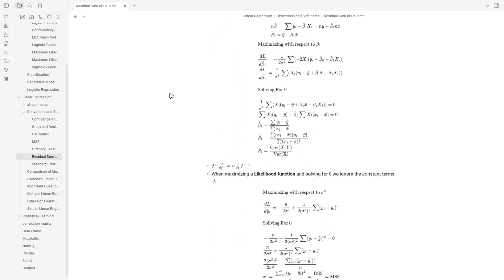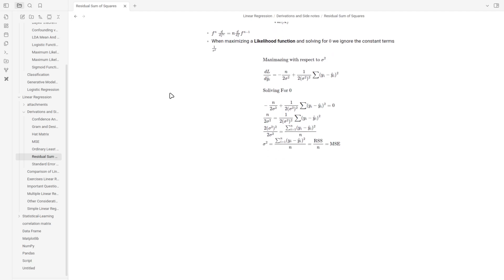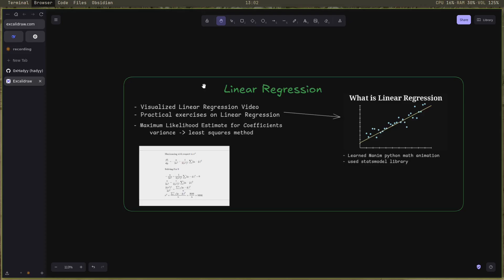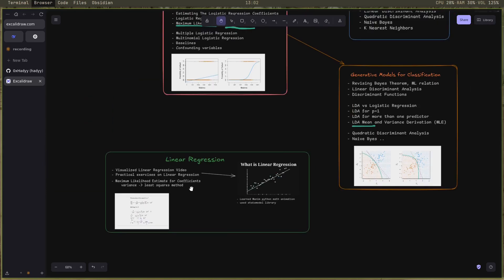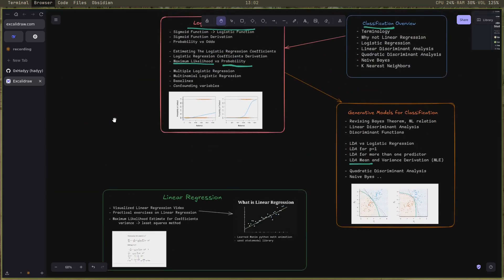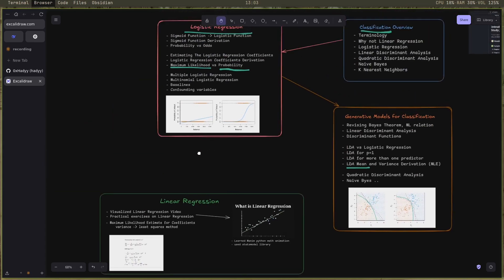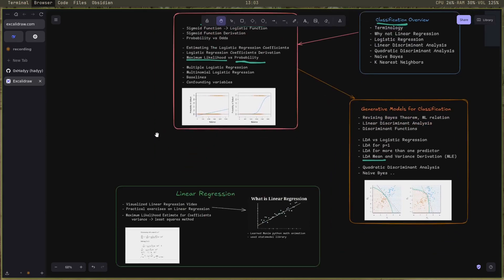When studying the maximum likelihood estimates, I linked it with the least squares method, which is just a special case of maximum likelihood estimate for a parameter. I also rewrote some notes about the residual sum of squares and the least squares method using maximum likelihood. The newfound knowledge made me link a lot of stuff between linear regression and logistic regression, and why maximum likelihood estimate is one of the most important concepts in statistics and machine learning.